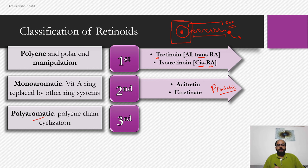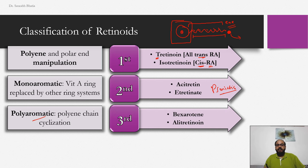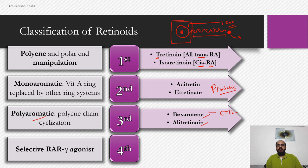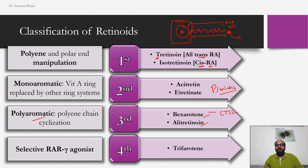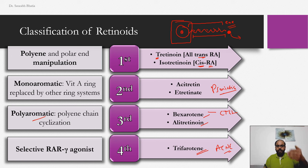The third generation has polyaromatic retinoids — multiple rings attached to the chain — and includes bexarotene and alitretinoin. Bexarotene is a very important molecule for CTCL (cutaneous T-cell lymphoma). The fourth class is a selective RAR gamma agonist, and contains one drug — trifarotene — which is the latest FDA-approved retinoid for acne.